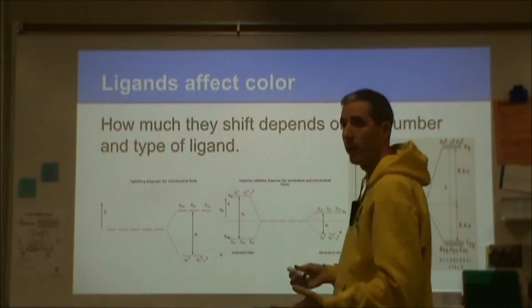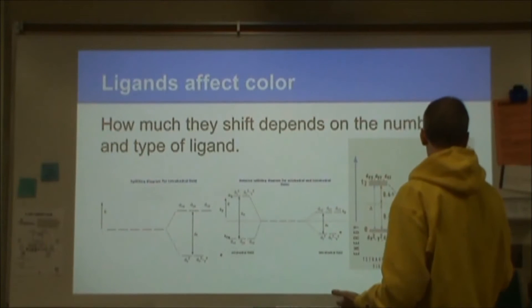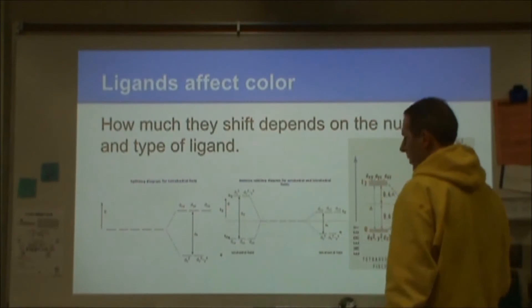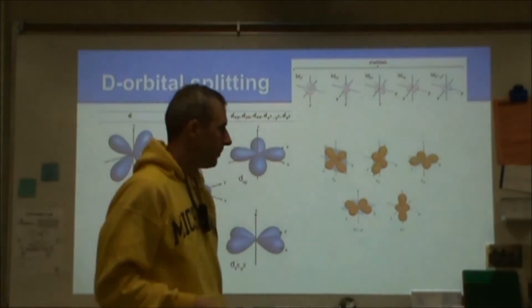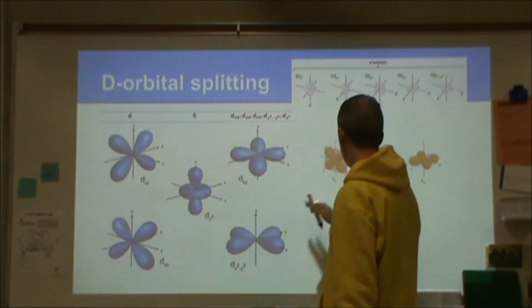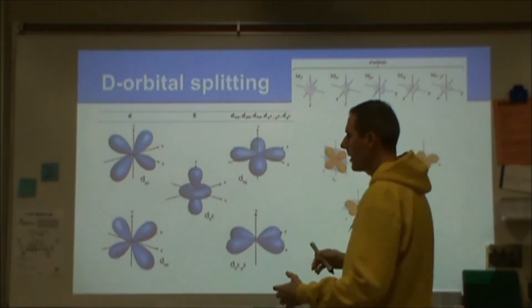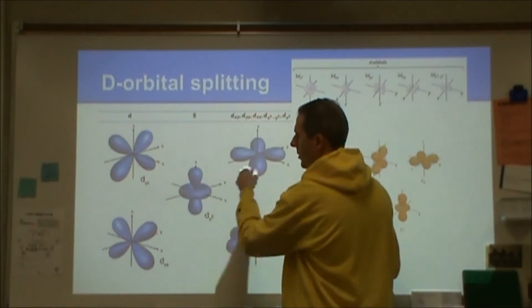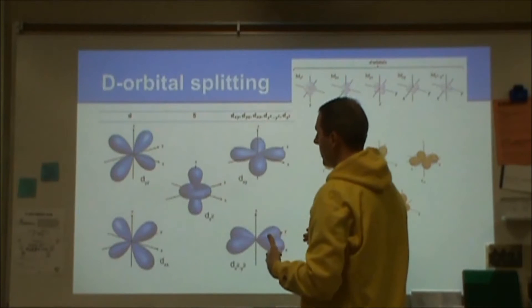Transition metals are unique because when complexed, something interesting happens. With transition metals, you're looking at d-orbital occupation. Here we have a set of d-orbitals. Something that you may not notice, but I'm going to draw your attention to, is that some of the d-orbitals are along the axis and some of them are not.